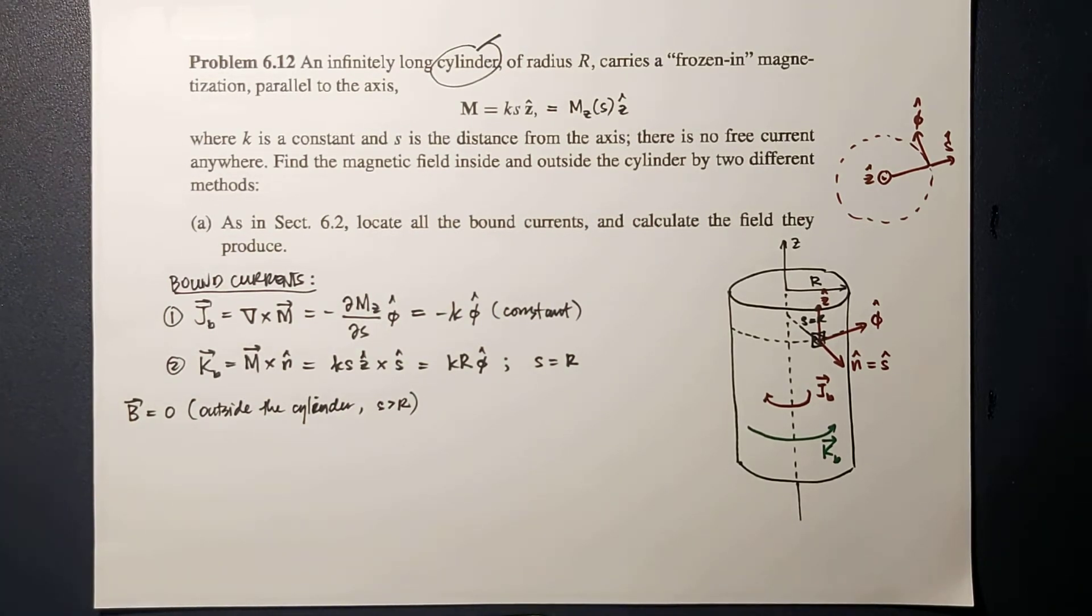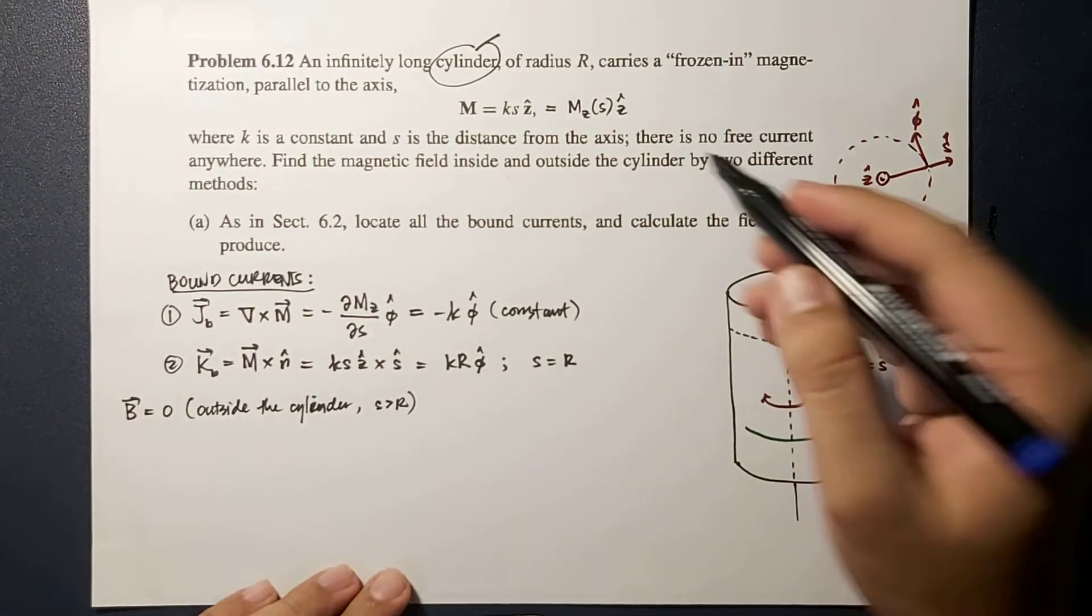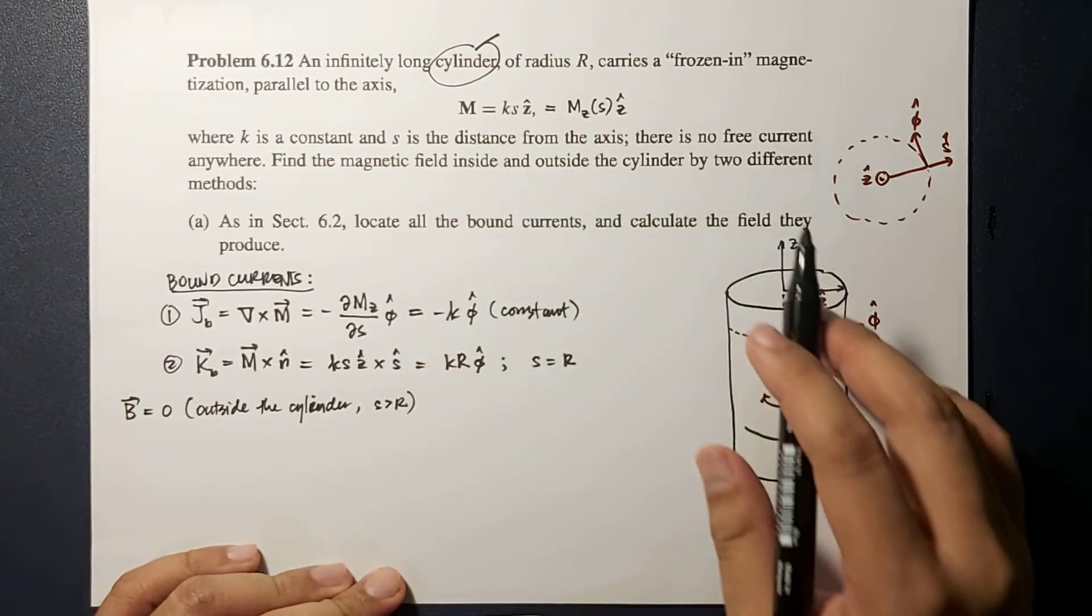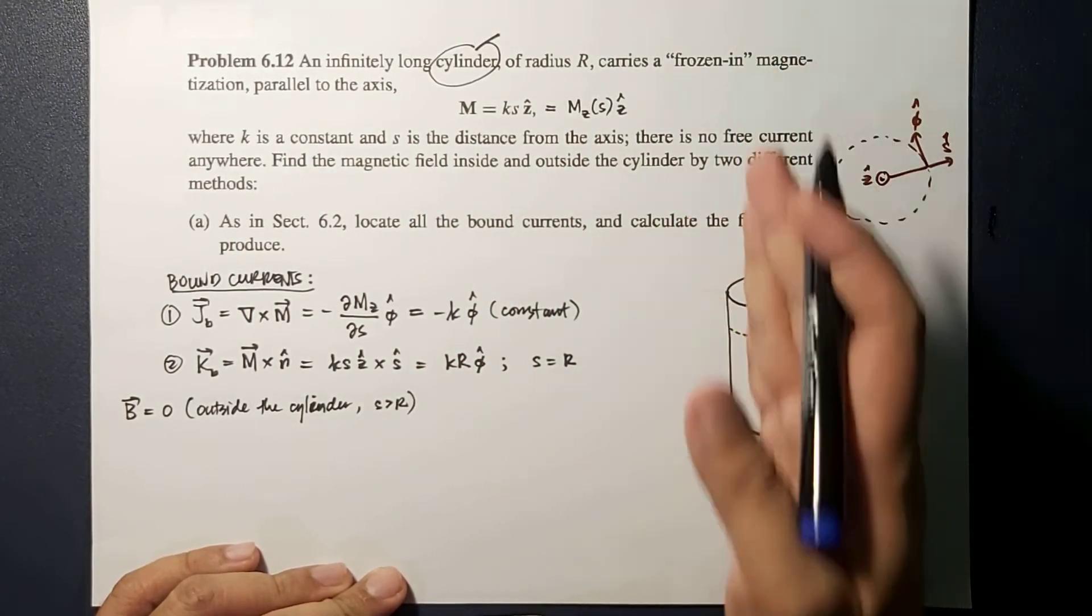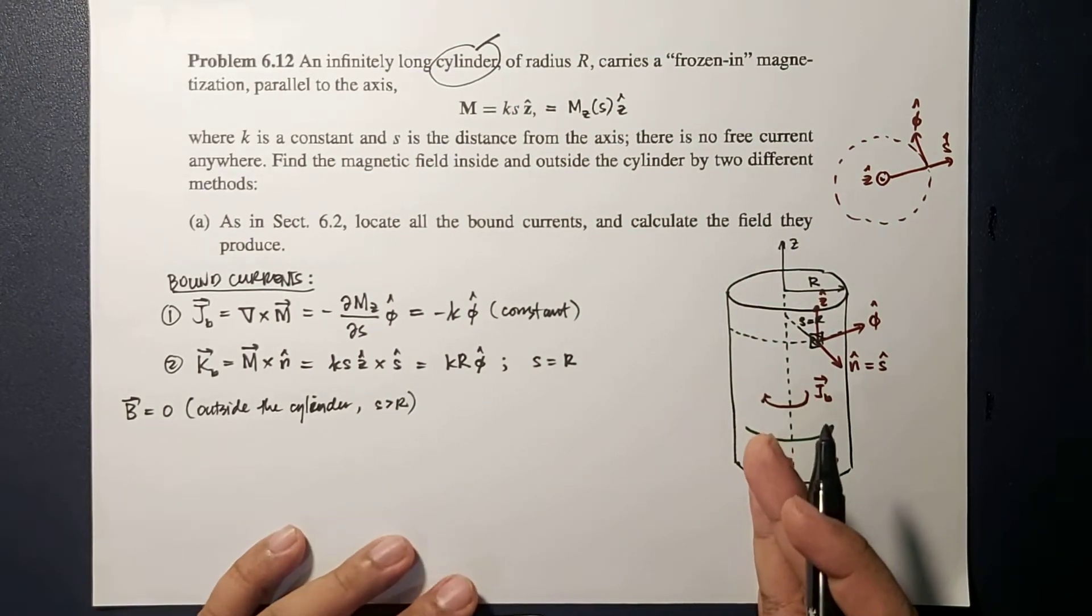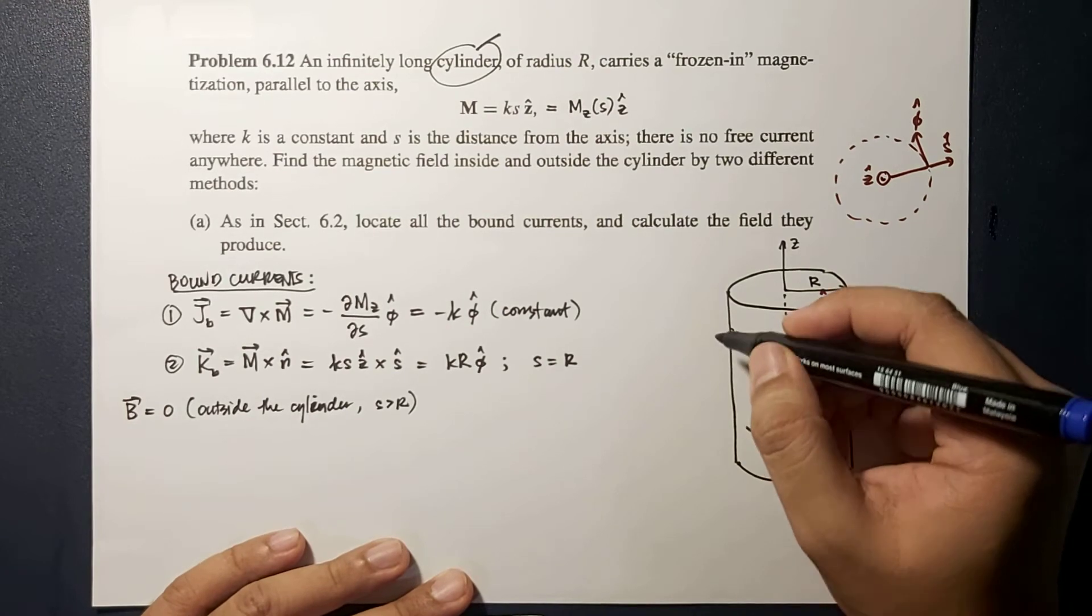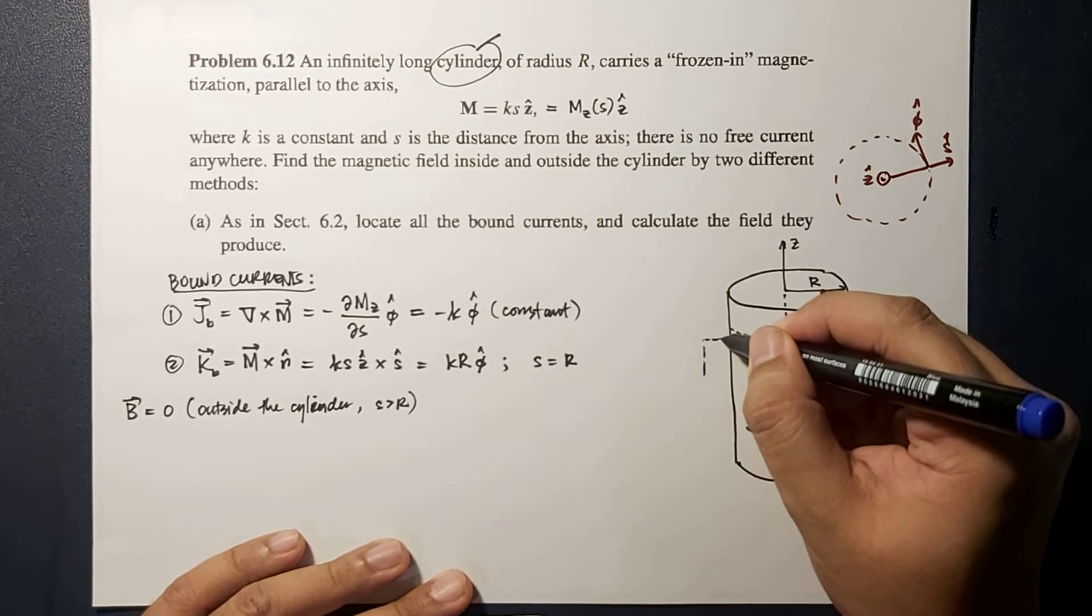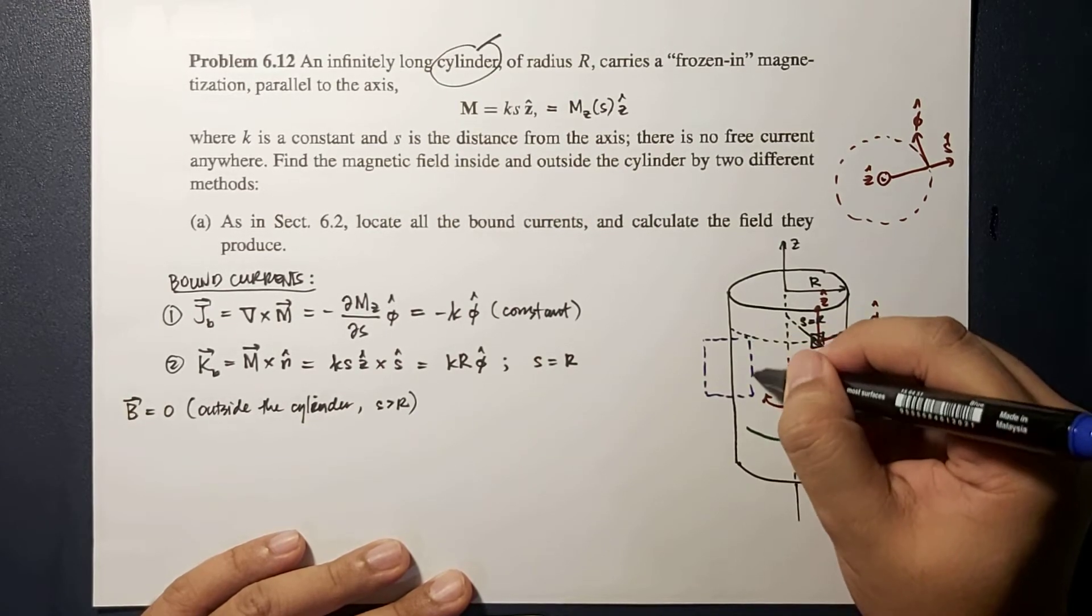If we're going to use Ampere's law, let's first identify your Amperian loop. We already know that the magnetization direction is along Z, so the magnetic field will also be along that direction. So by symmetry, we can choose this Amperian loop.